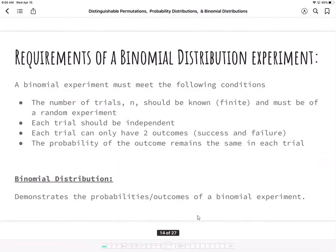To have a binomial distribution or experiment, we must meet the following conditions. The first, the number of trials, which in this case for our questions would have been 20 questions or 20 coin flips. Should be known, so we can't have an infinite amount of items happening. We did have a restriction of 20 so we meet that condition and must be of a random experiment. So it must have a random variable in it that's defined.